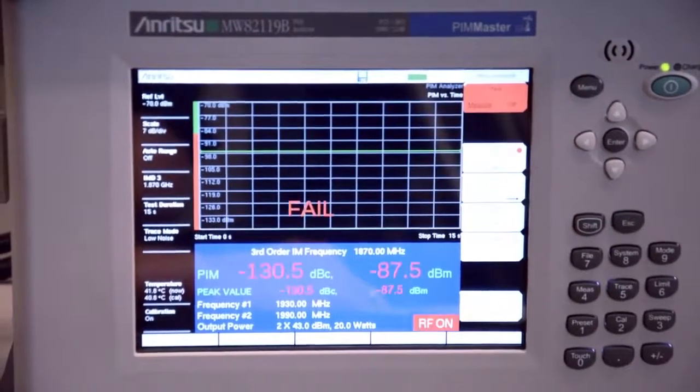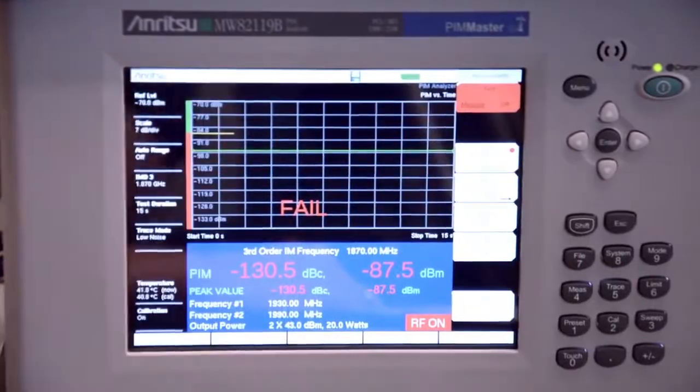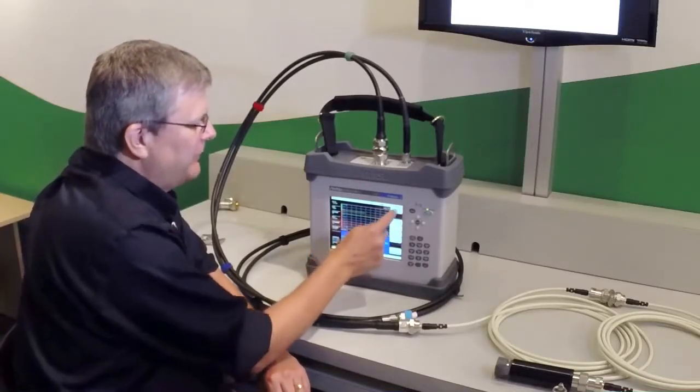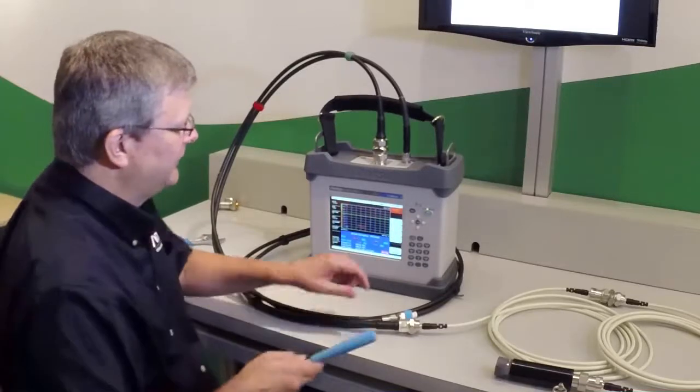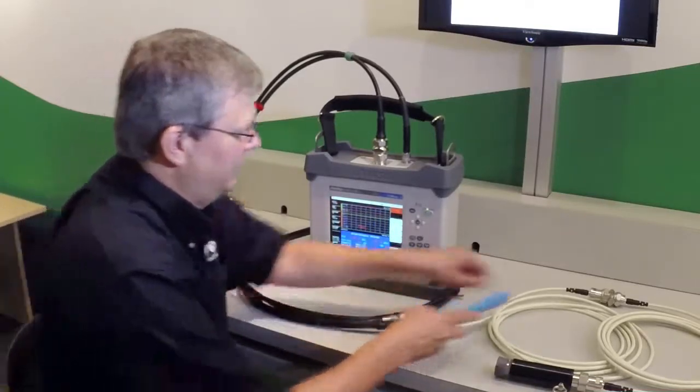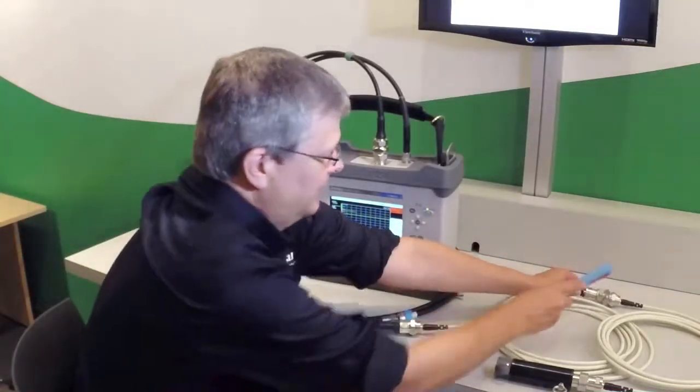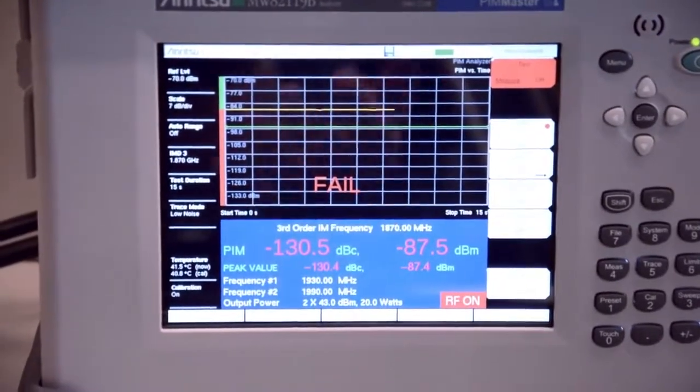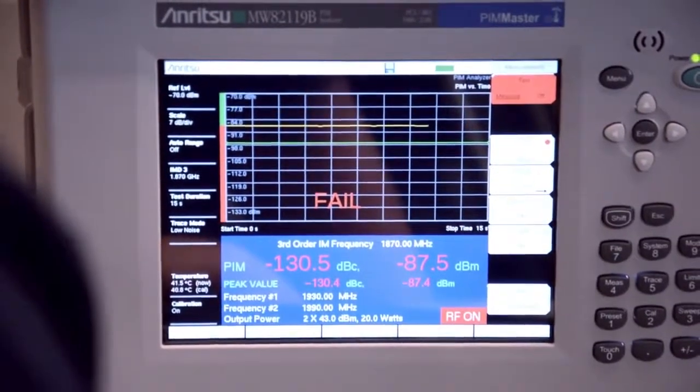We start the test, and we see that we have a failure. If I was doing this test with a traditional PIM analyzer, the first thing I would do is start tapping on the connections, trying to find the location of that PIM source. As you can see here, I don't have any indication where it is.